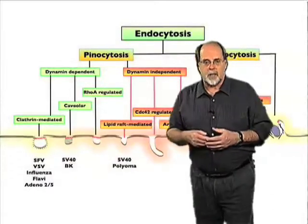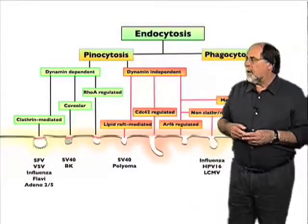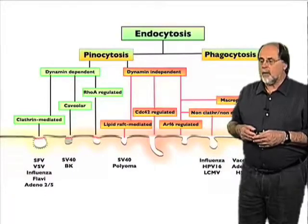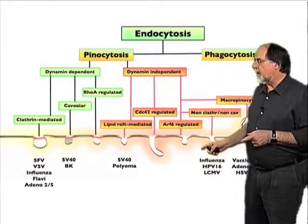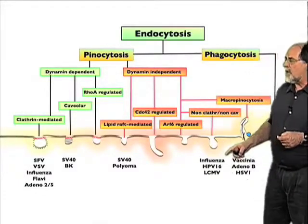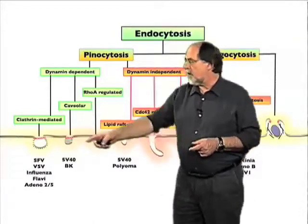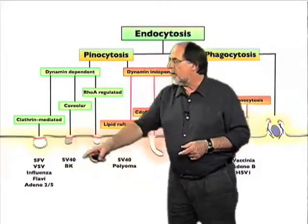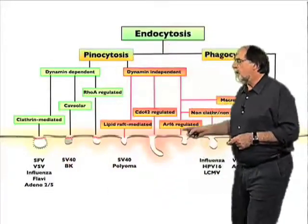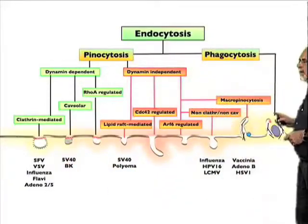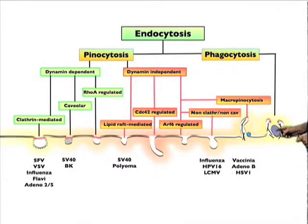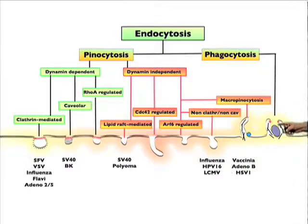Endocytosis is a very complex process. There are many different mechanisms of endocytic uptake. Best known is clathrin-mediated endocytosis, which I talked about for virus uptake — many viruses, probably the majority, use it. Another pathway is phagocytic uptake, where large particles are internalized in tight-fitting large vacuoles. This type of uptake is often used by cells that internalize bacteria.